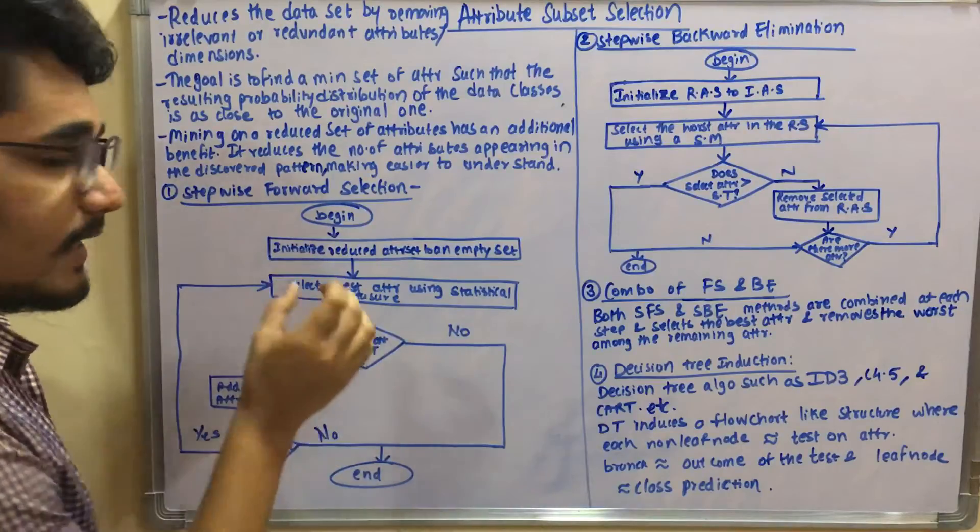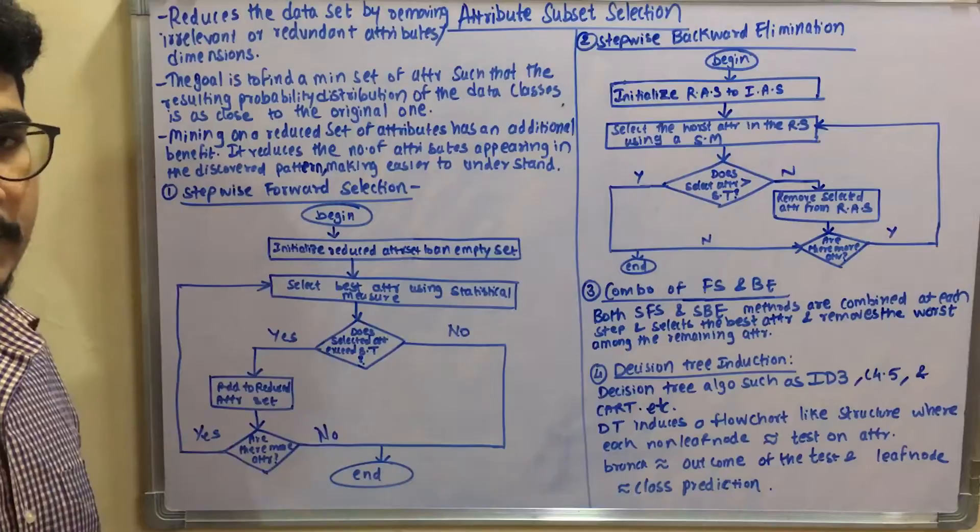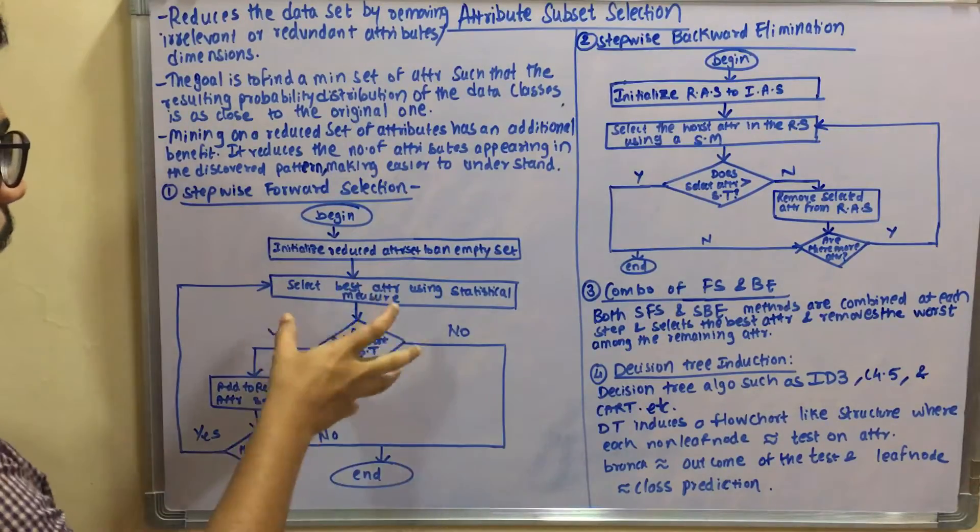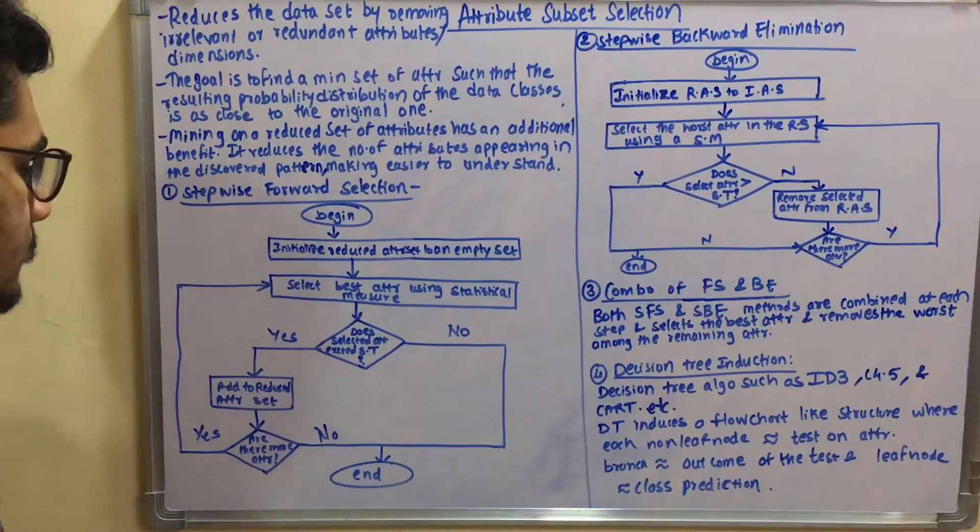Then you check whether the selected attribute exceeds the ST - ST stands for stopping threshold. It's a decision parameter. If it is yes, then you add it to the reduced attribute set, and if it's no, the algorithm stops there.